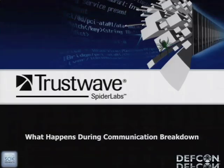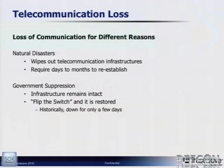What actually happens during the communication breakdown — we'll talk about both natural disasters and government intervention. Natural disasters naturally wipe out the telecommunication infrastructure, and it can actually require days to get mobile devices on site to reestablish some telecommunications. In essence, it really takes months to reconstruct that. Under government suppression, it's different. The infrastructure remains intact. Basically somebody just turns off a switch like they did in Egypt and shut down most of the telecommunications and internet. Based on our limited history with this, it's down for only a few days — usually it comes back up because of economic pressure.